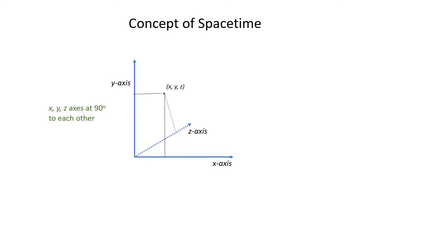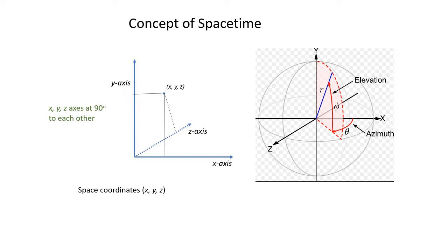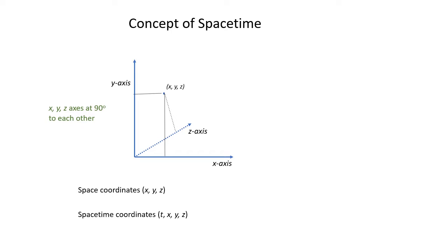But first, a little background about spacetime. All of you will be familiar with the concept of space coordinates x, y, z to locate a point in space, although polar coordinates can be used instead, where we have a distance from the origin and two angles. But to define when an event occurs, we also need to know the time coordinates. The set of four coordinates are called the spacetime coordinates.